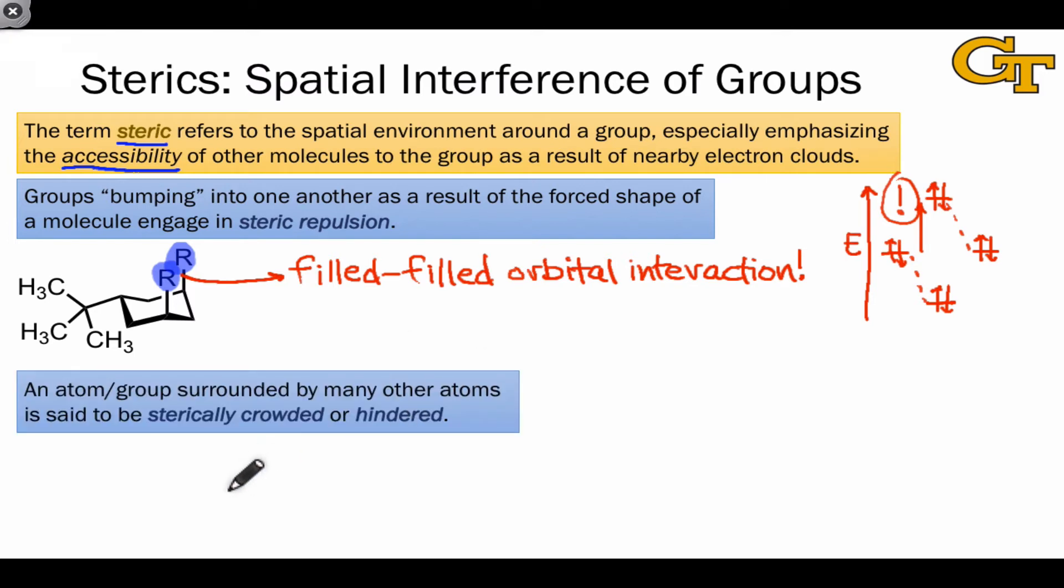An atom or group surrounded by many others is said to be sterically crowded or sterically hindered. A classic example of a very large group that causes steric hindrance at atoms nearby is the tert-butyl group. For example, the molecule tert-butyl bromide seems to be well positioned electronically to engage in reactions in which this carbon acts as an electron sink since it's attached to an electronegative bromine atom. However, the three methyl groups in close proximity to this would-be reactive carbon shield it from other potentially incoming molecules.